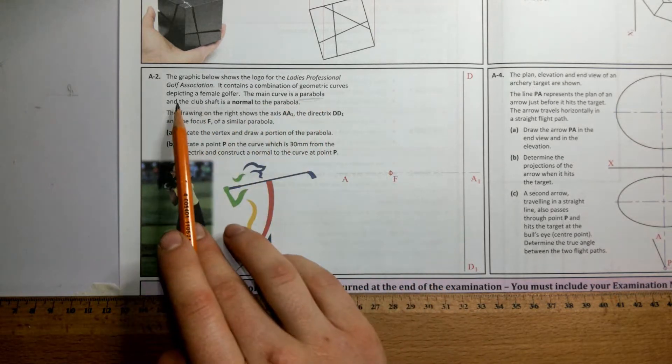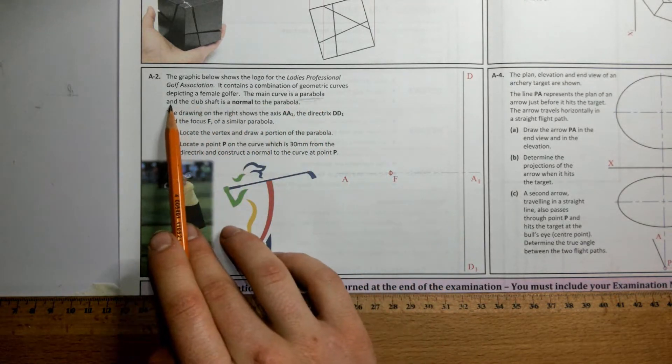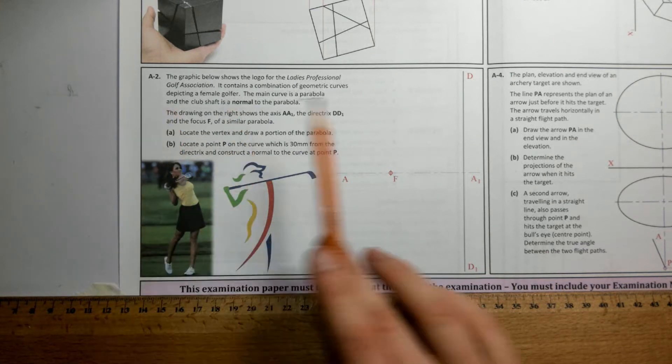The eccentricity is 1 to 1, so PF is equal to PD. Any point on the curve to F, the focus, is the same distance as that point back to D, the directrix.